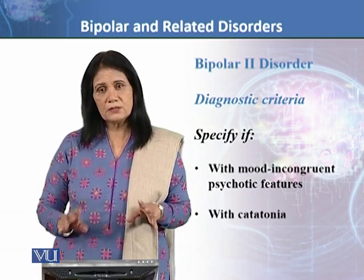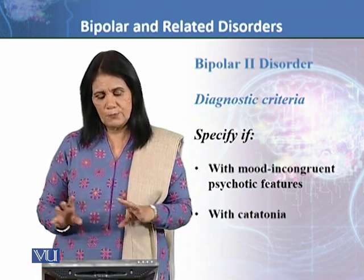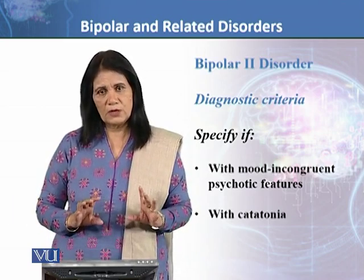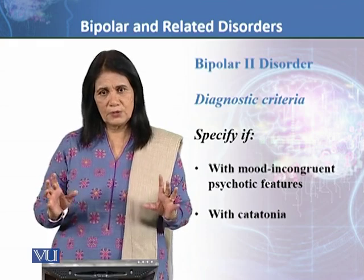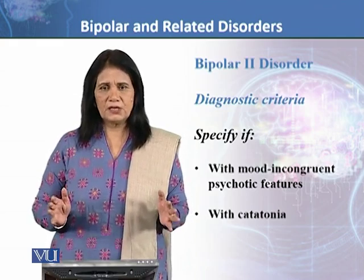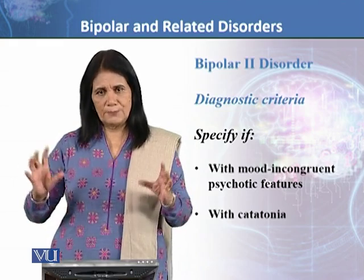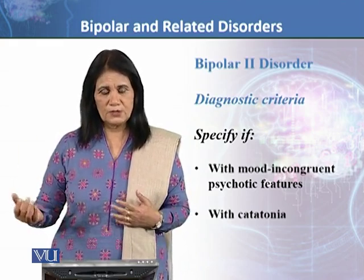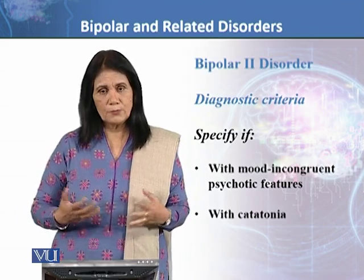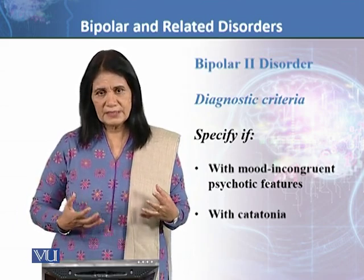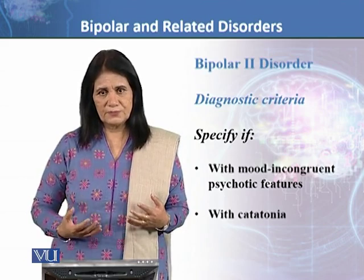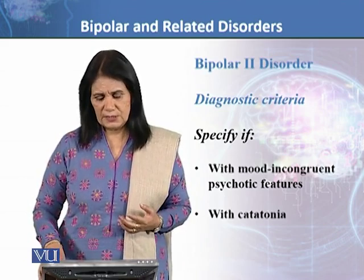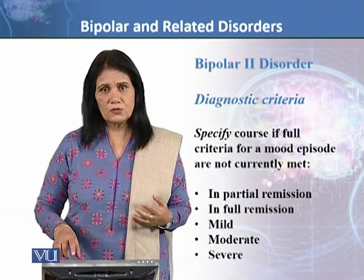If you see the diagnostic criteria, you will notice a lot of commonality between Bipolar 1 and Bipolar 2. In Bipolar 1, there is predominantly major depression but there is also at least one manic episode; hypomania is not present there. In Bipolar 2, hypomania is prominent, but at the same time major depressive symptoms are also occurring. The rest of the features are more or less the same, though severity of course would be less.